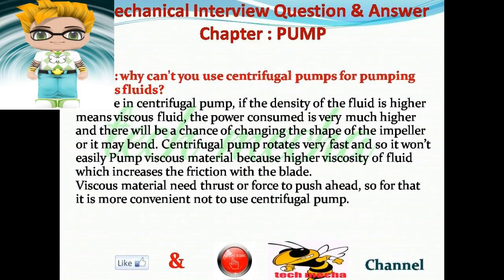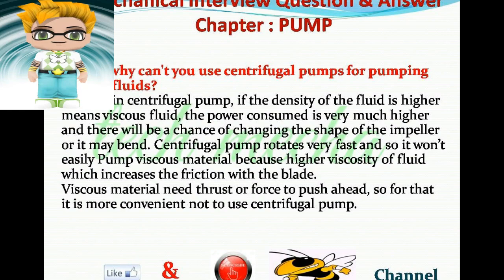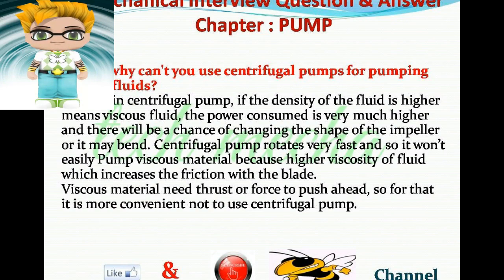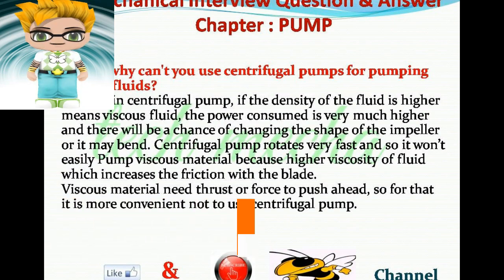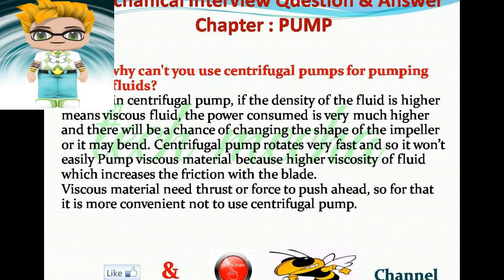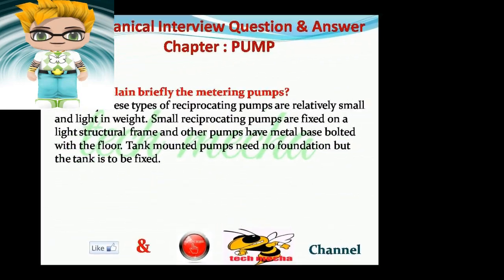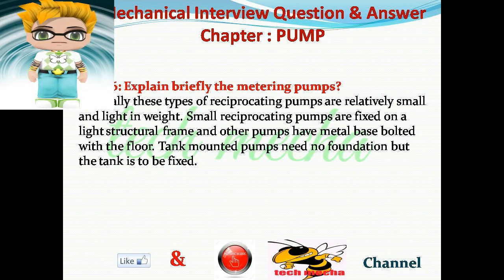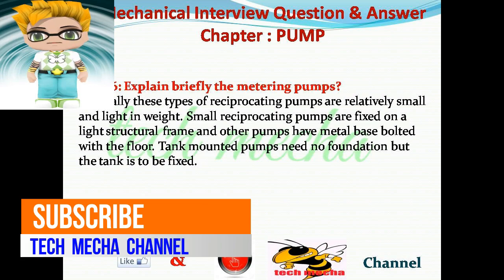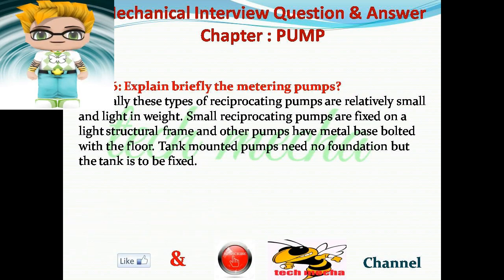Question number 35: Why can't you use centrifugal pumps for pumping viscous fluids? Answer: In a centrifugal pump, if the density of the fluid is higher — i.e., viscous fluid — the power consumed is much higher and there is a chance of changing the shape of the impeller or it may bend. Centrifugal pumps rotate very fast and won't easily pump viscous material because higher viscosity increases friction with the blade. Viscous material needs thrust or force to push ahead, so it is not convenient to use a centrifugal pump. Question number 36: Explain briefly the metering pumps. Answer: Generally these types of reciprocating pumps are relatively small and light in weight. Small reciprocating pumps are fixed on a light structural frame; other pumps have a metal base bolted to the floor. Tank mounted pumps need no foundation but the tank must be fixed.